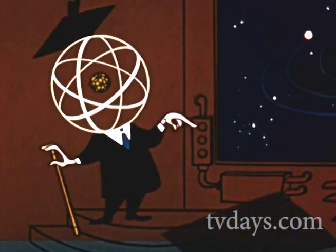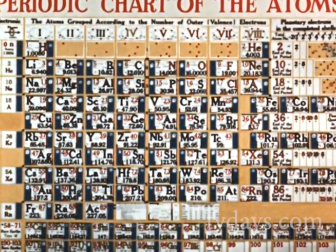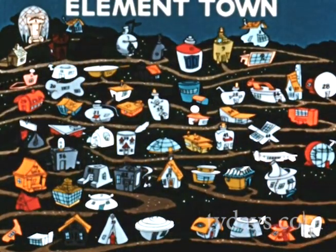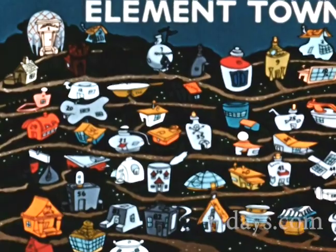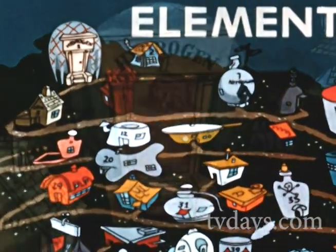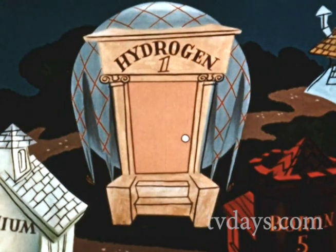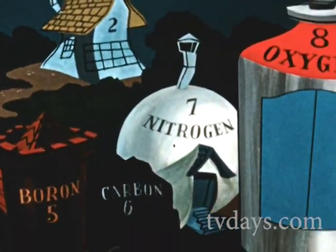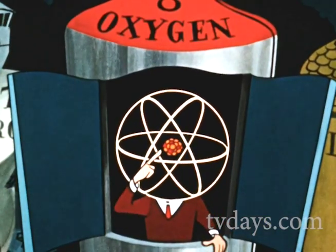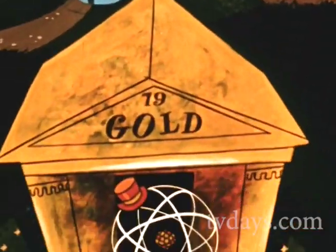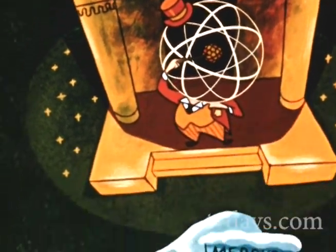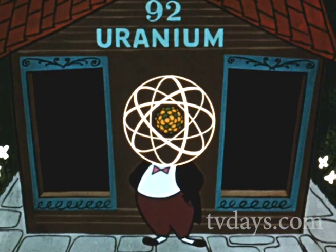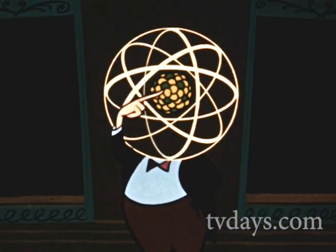But certainly, not all atoms are alike. There are, in nature, more than 90 basic elements, which is science term for families of atoms. To scientists, the atoms of the individual atom families, or elements, are identified by number. That is, the number of protons, or positive charges, in their nucleus. And they vary all the way from hydrogen, which has just one proton, to oxygen, with eight protons, to gold, he's rich with 79. Finally, on to the heaviest of all natural elements, uranium, with 92 protons.